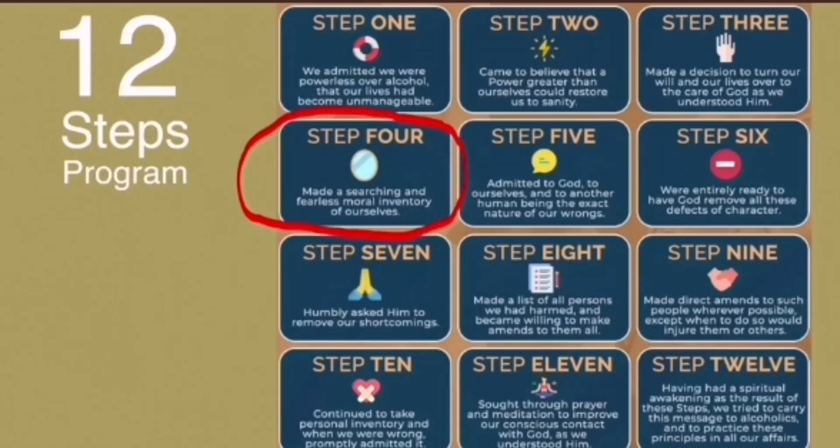The fourth of AA's 12 steps requires members to take a searching and fearless moral inventory in which the individual considers his or her character defects and how they have contributed to a problem. The fifth step is the confession step. This is where AA members admit to God, to ourselves, and to another human being the exact nature of our wrong. This straightforward, practical, and systematic approach can have a powerful and transformative impact.